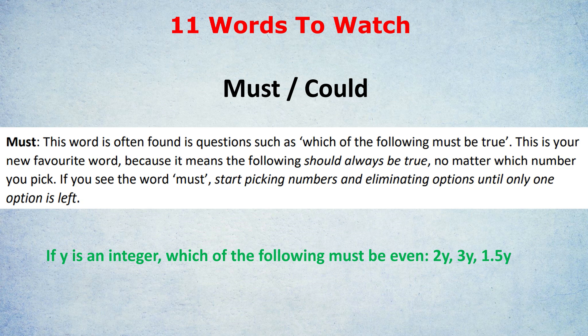So it's not enough to find one example, such as Y equals 2. All of the examples must be even. So when you see the word must, think every single example must fit. So here the answer would be 2Y, but not 3Y or 1.5Y. In every single example, 2Y must be even, when Y is an integer.